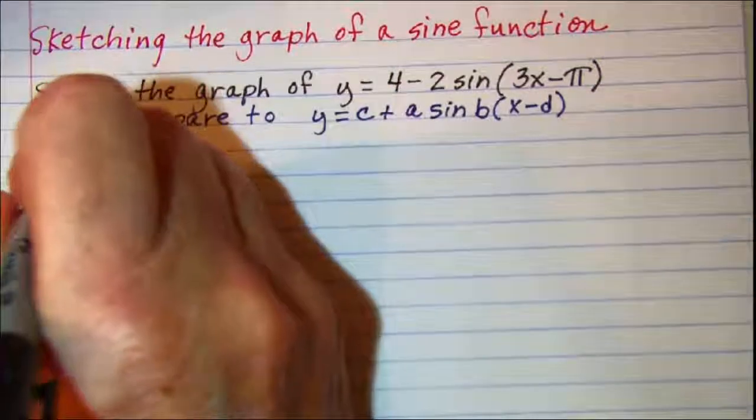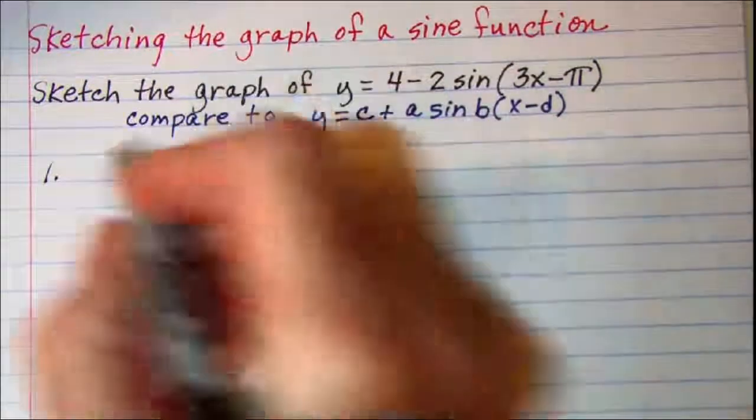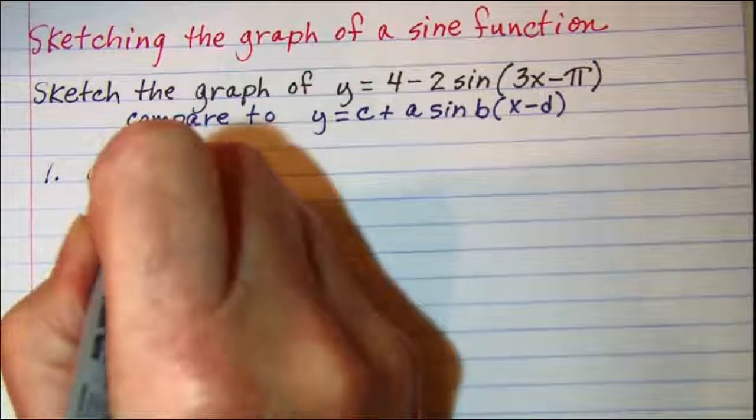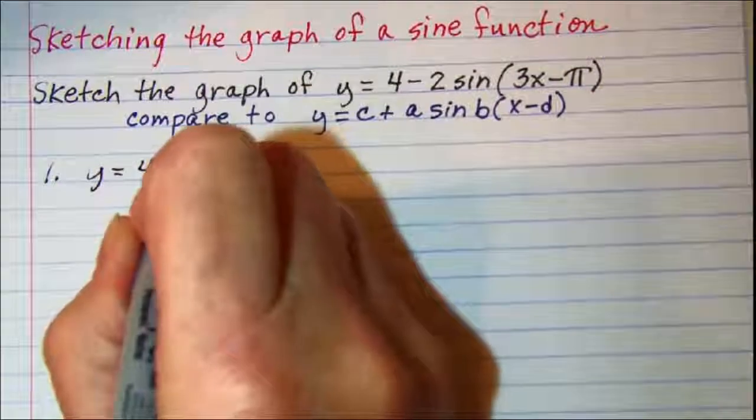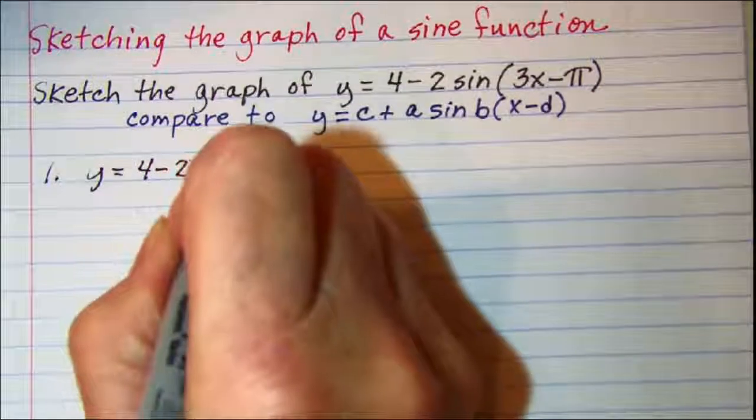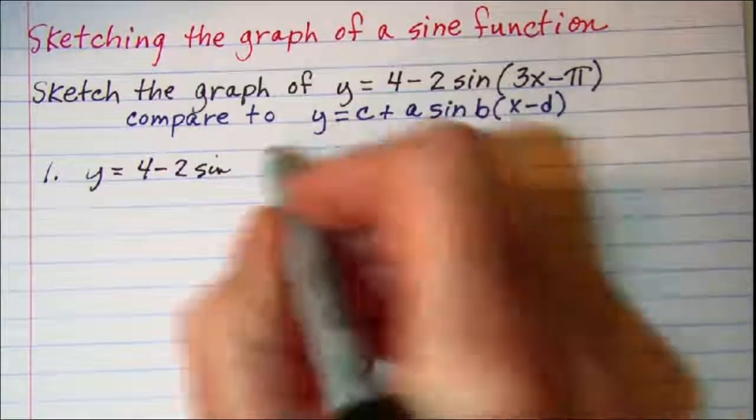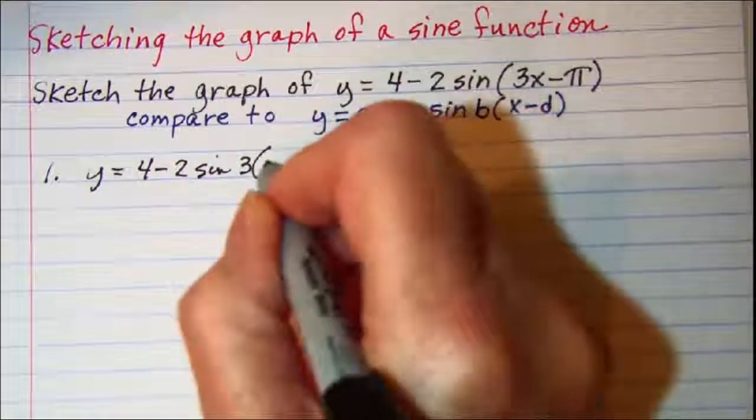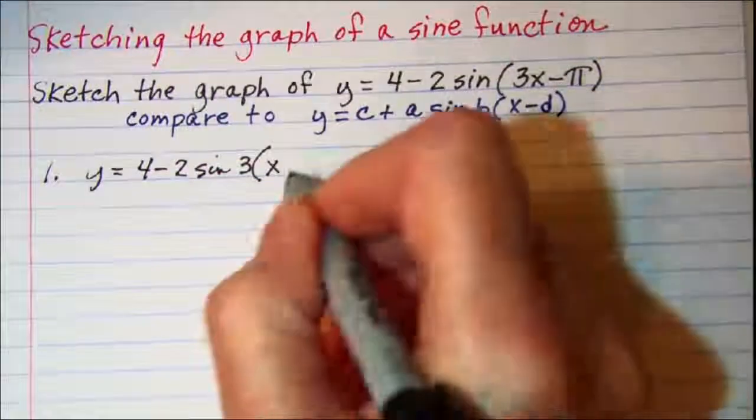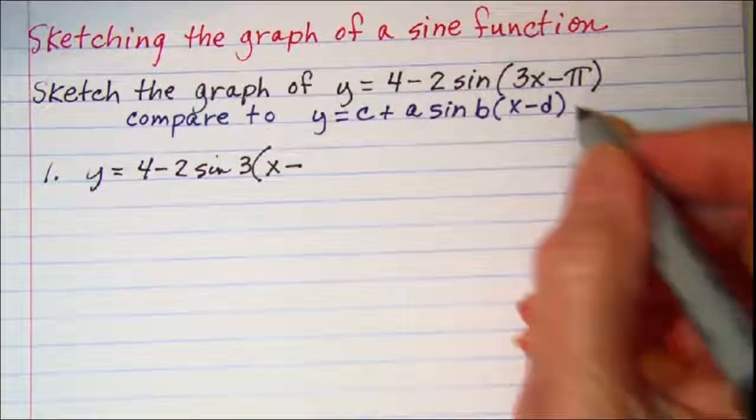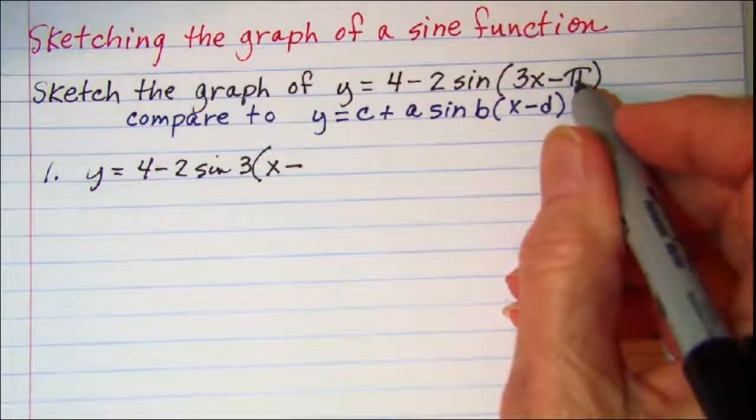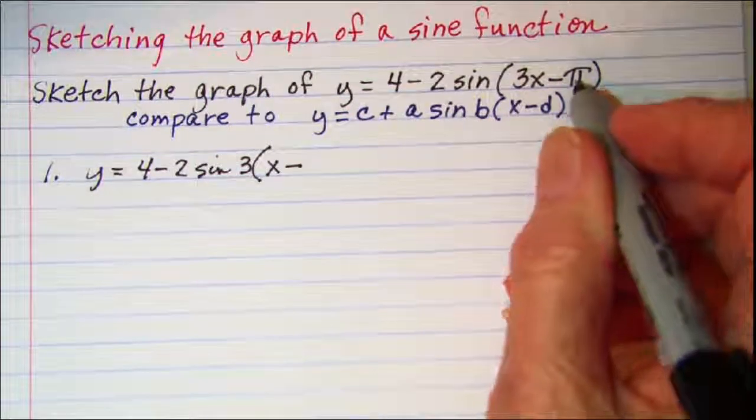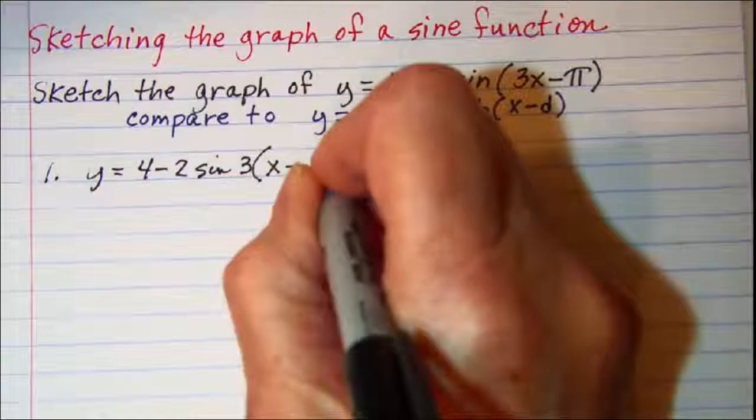So step 1 is to rewrite this y equals 4 minus 2 sine and then pull our 3 out and we have x left inside the parentheses minus, and then in order to factor out a 3 we need to divide this term by 3. So we have pi over 3.